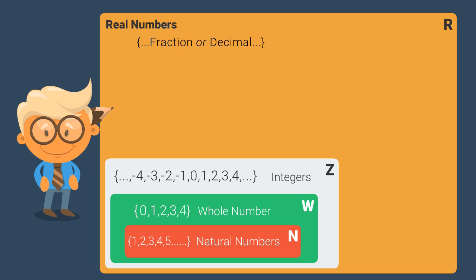Now, take any integer, say minus 4. This number can be denoted as a fraction, namely minus 4 by 1. So, all integers are real numbers too, as obviously are the whole numbers and the natural numbers as well.